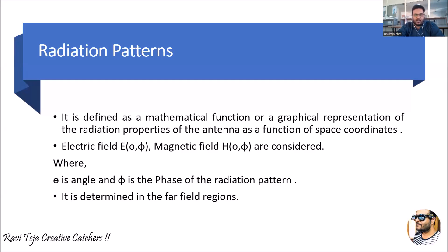Hello everyone, welcome to the course of Antennas and Propagation. In today's class we are going to learn about radiation patterns — a basic antenna parameter. A radiation pattern in an antenna is defined as the mathematical function or graphical representation of the radiation properties of the antenna as a function of space coordinates, exhibiting radiation properties in free space coordinates.